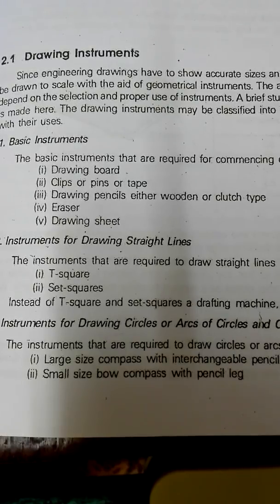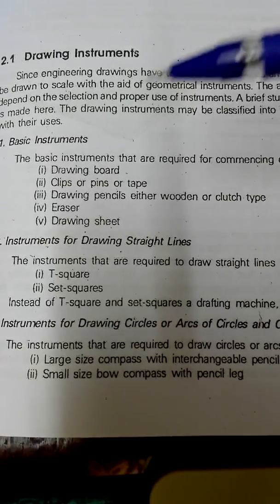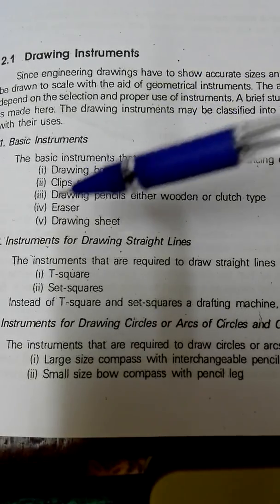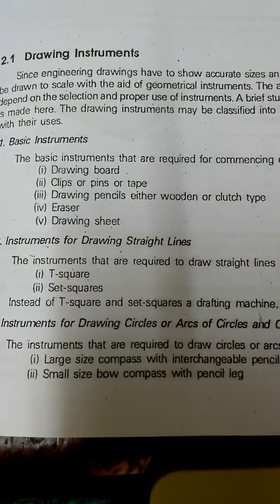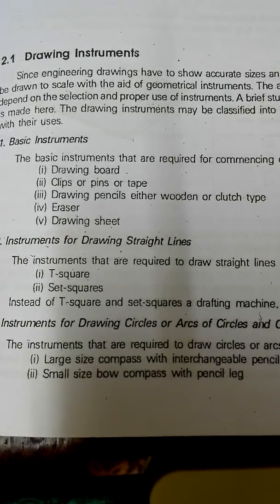The basic instruments used for drawing are: the drawing board, clips or pins or tape, a drawing pencil — either wooden or clutch type — and an eraser. Drawing sheets are also required. These were the basic traditional tools, but nowadays you can find software like CATIA and AutoCAD that are used instead.